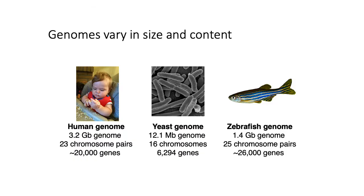Genomes vary pretty widely in size and content. The human genome is roughly 3.2 gigabases long and has roughly 20,000 protein-coding genes, depending on how you count. The yeast genome in comparison is pretty compact at only 12.1 megabases, but has quite a few genes nonetheless — somewhere on the order of 6,300 ORFs.